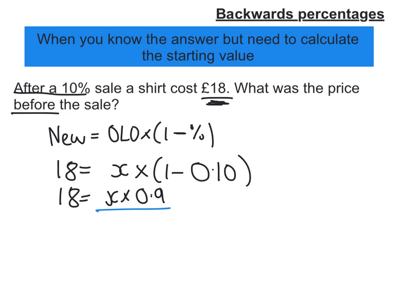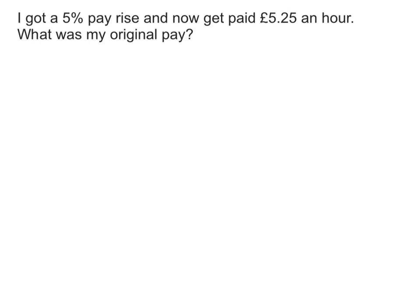Now to solve that equation, what I need to do is divide both sides by 0.9. If I do that, I'm going to get x equals £20, and that's my answer. The shirt used to cost £20.